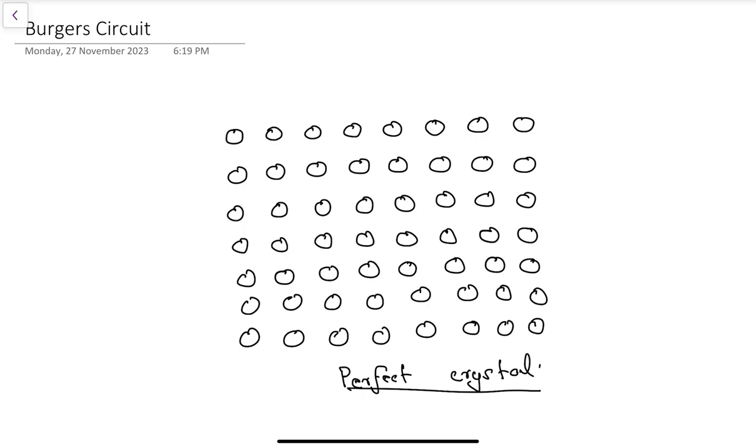In this video, we will discuss Burgess circuit. We have already seen what you mean by Burgess vector, which gives you the magnitude and direction of slip. There is another way of looking at this Burgess vector and that is called Burgess circuit.